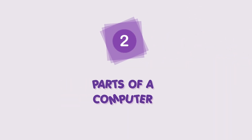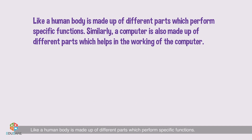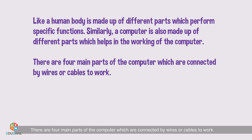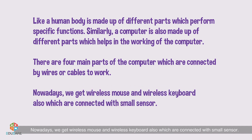Chapter 2: Parts of a Computer. Like a human body is made up of different parts which perform specific functions, a computer is also made up of different parts which help in its working. There are four main parts of the computer which are connected by wires or cables. Nowadays, we also get wireless mouse and wireless keyboard, which are connected with small sensors.